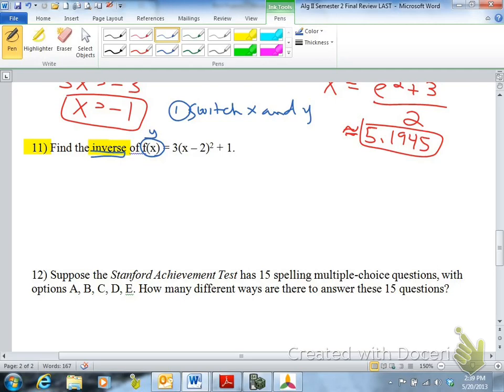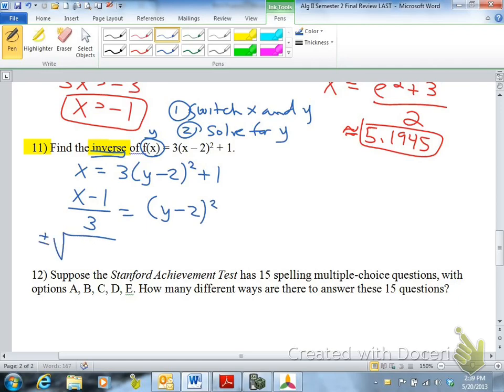F of x is the same thing. So you'd have x equals 3, y minus 2 squared, plus 1. And then the second step is solve for y. Those are the basic two steps. The third step is to write the correct notation, which sometimes students forget to do that. But on this, you would subtract 1, divide by 3. Then you get to this point, and then you can take the square root of both sides. x minus 1 over 3. And you get to that point, and then you add 2. So you have y equals 2 plus or minus square root of x minus 1 over 3.